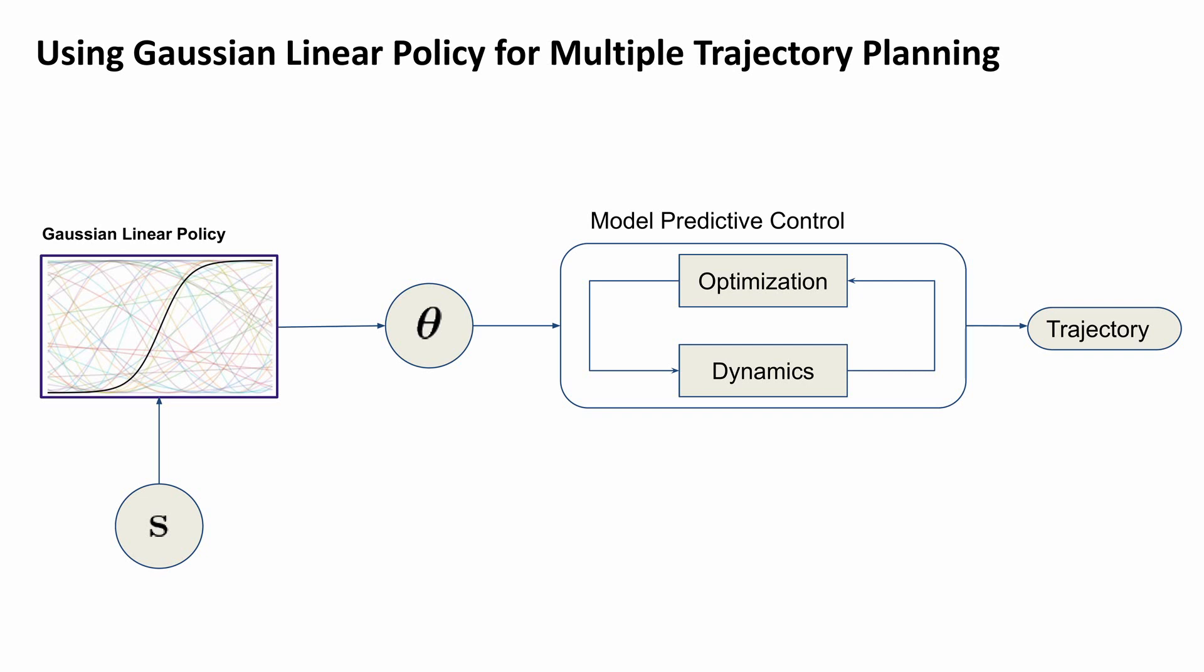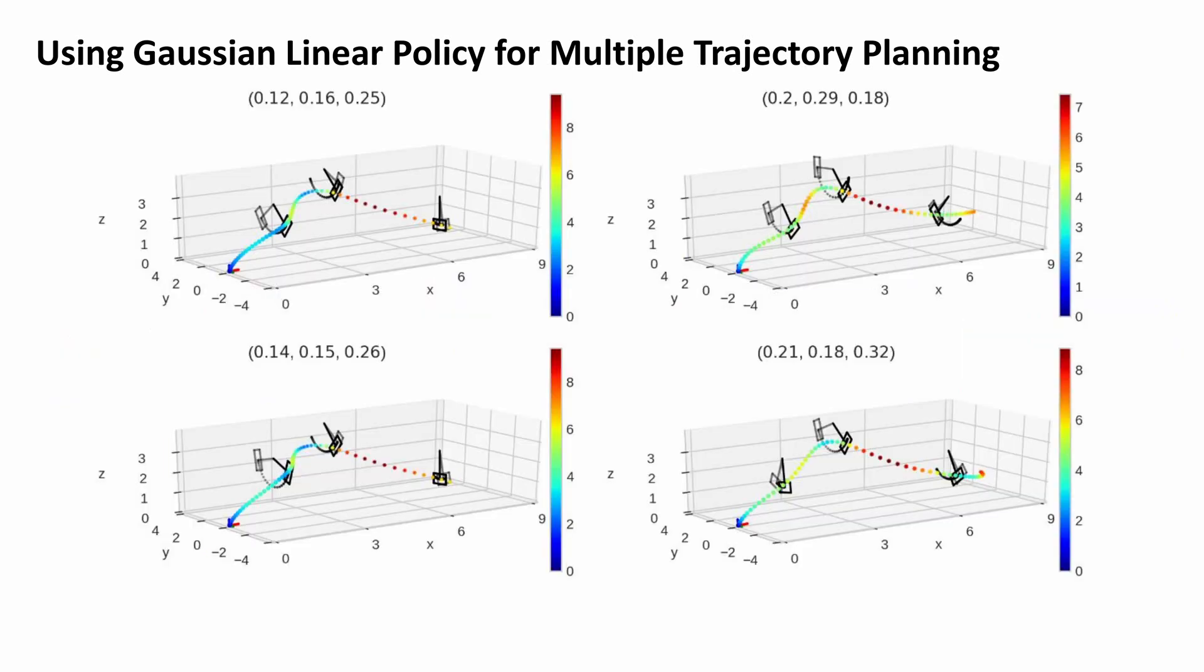We represent the high-level policy using a Gaussian linear policy. After optimizing the Gaussian linear policy, we can plan a trajectory under different initialization of the moving gates.